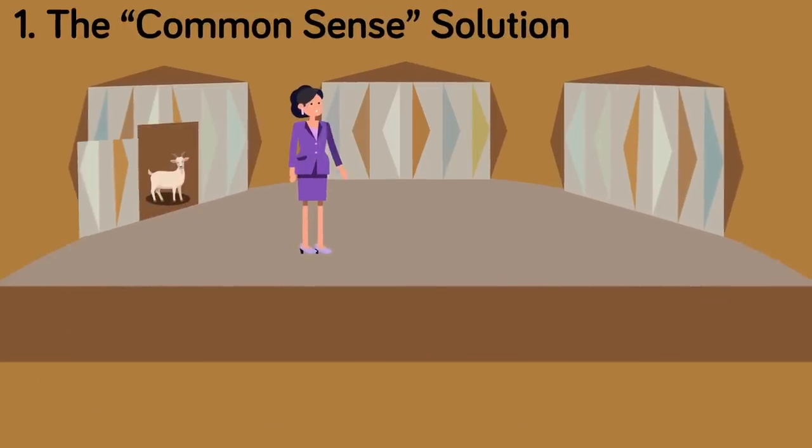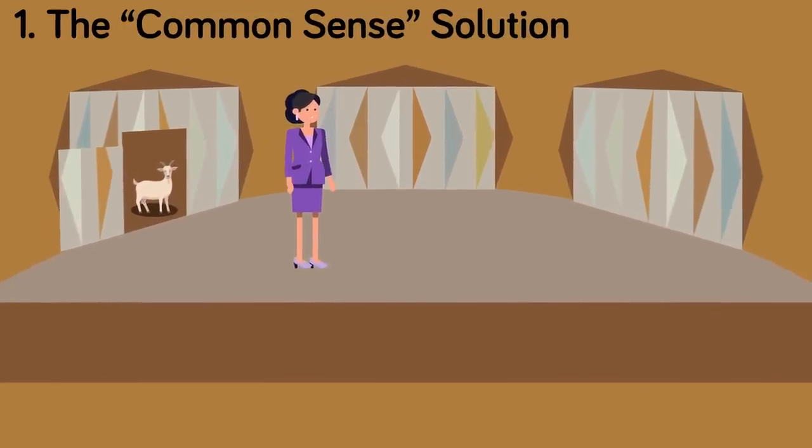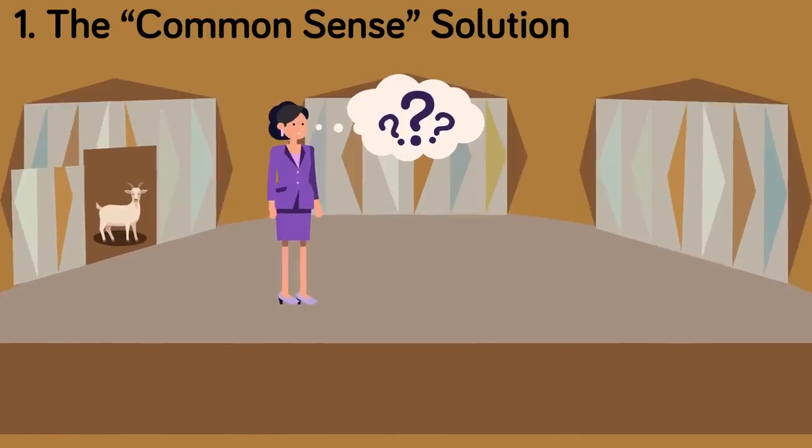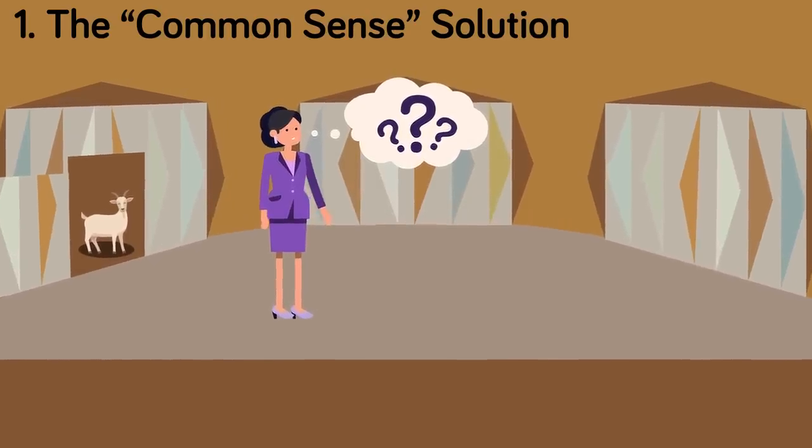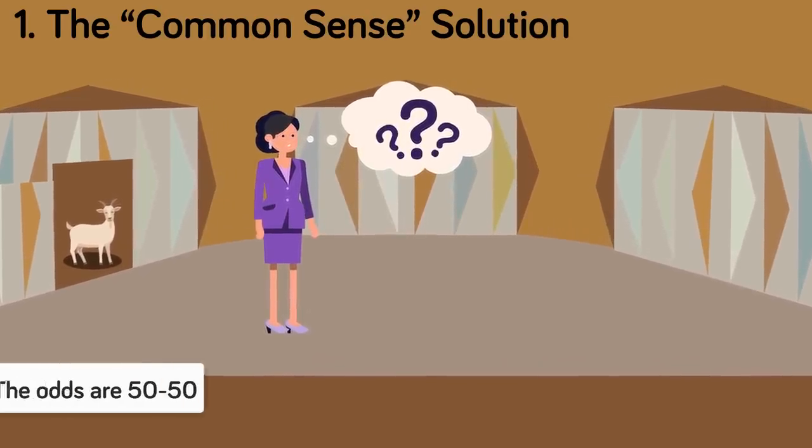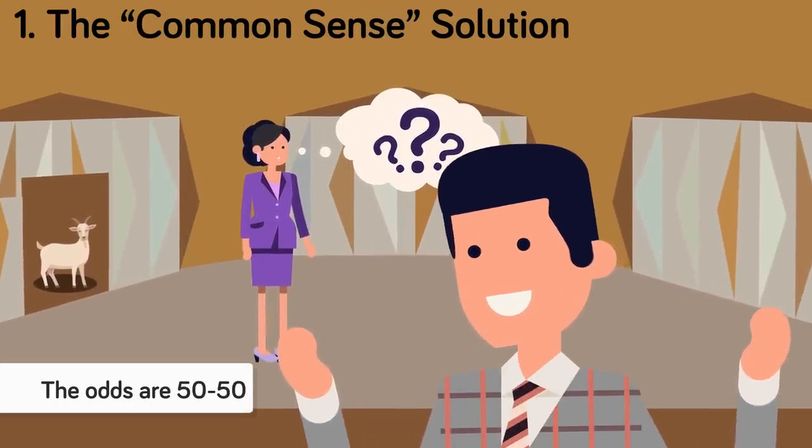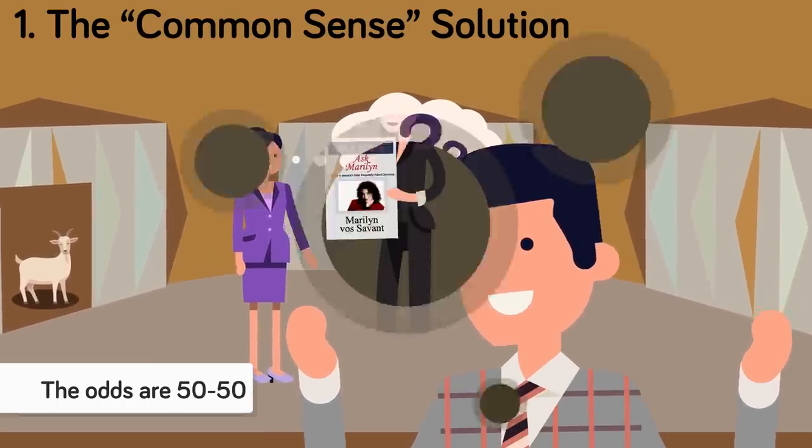1. The Common Sense Solution. If you know that a goat is behind one of the three doors, then there are only two doors left to choose from. A goat is behind one of the doors, and a car is behind the second remaining door, so your odds of picking the door with the car is 50-50. This is the solution that is the easiest for most people to understand, but now many experts think it is wrong.